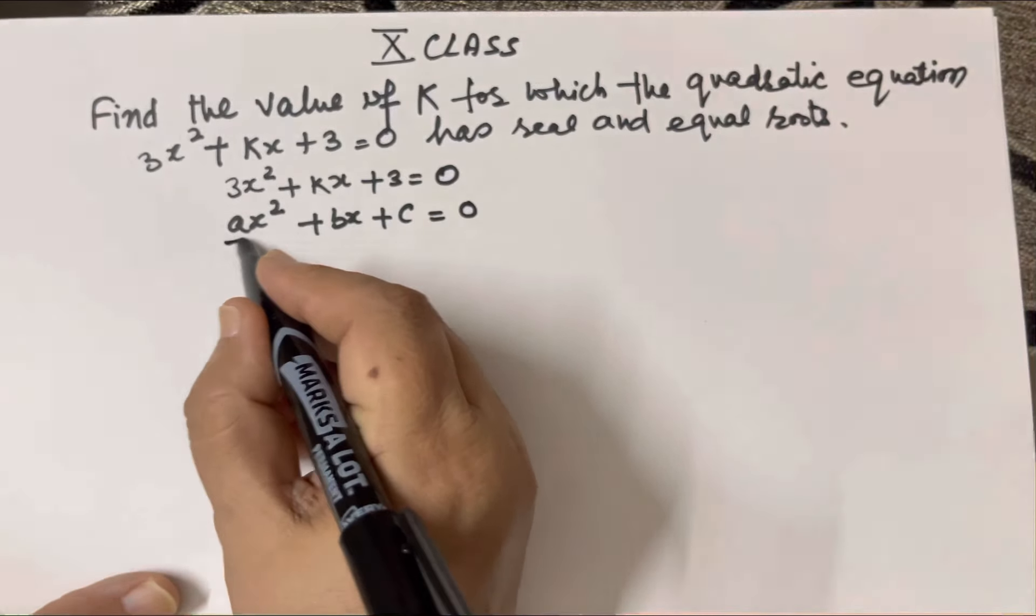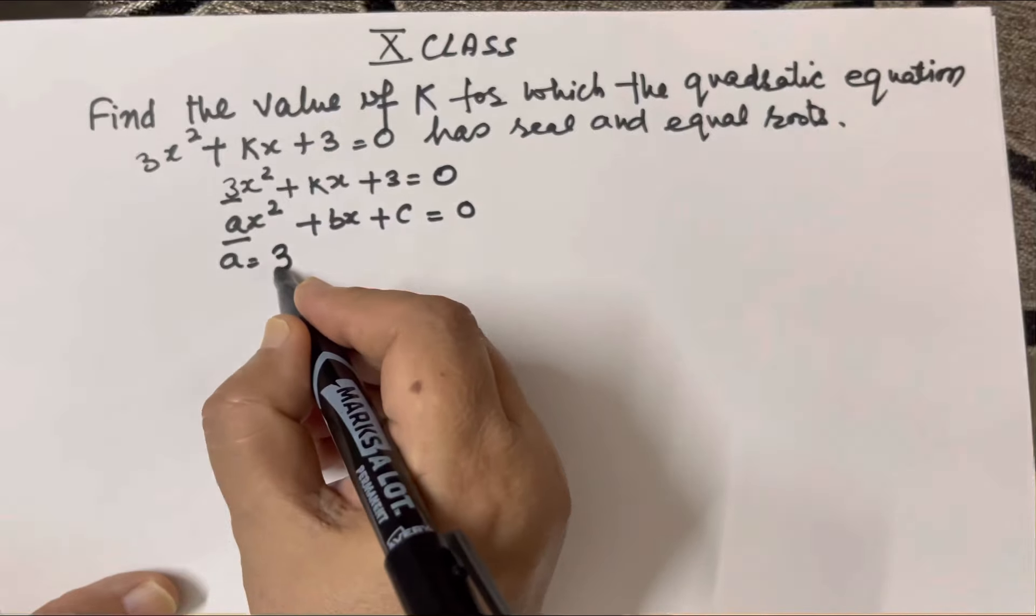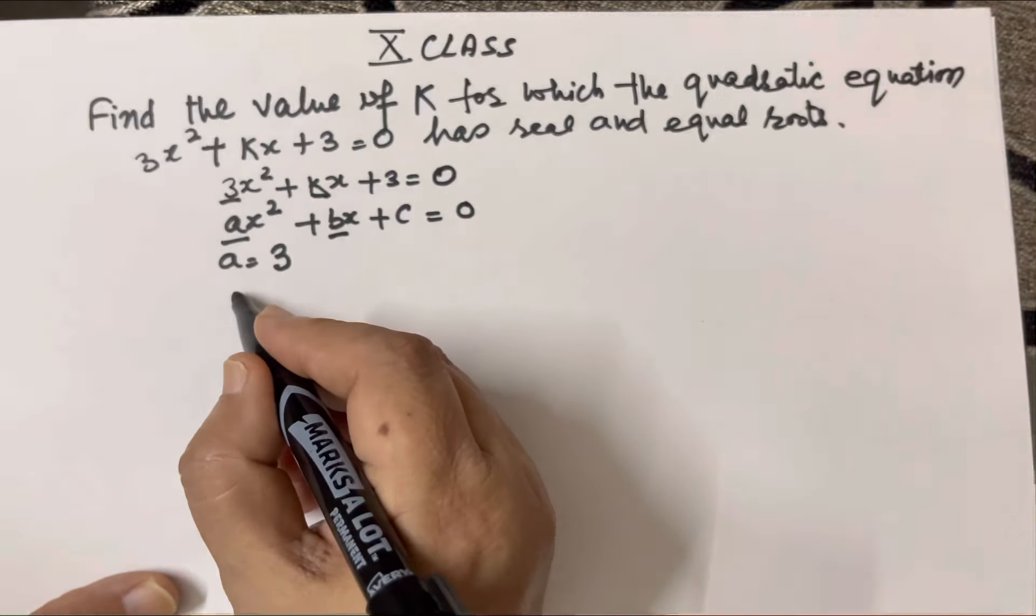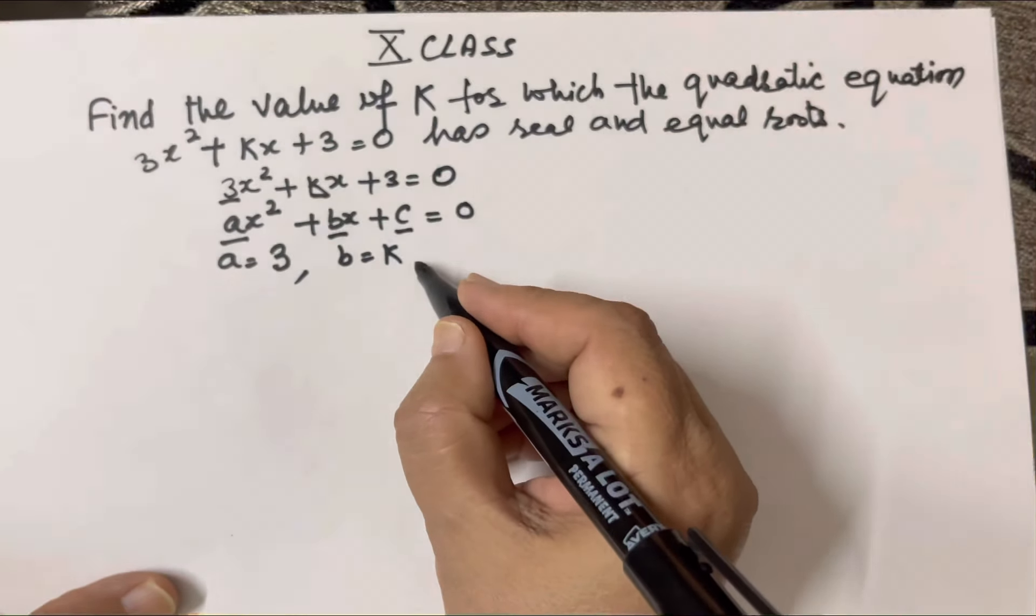Here, a is equal to 3, b is equal to k, and c is equal to 3.